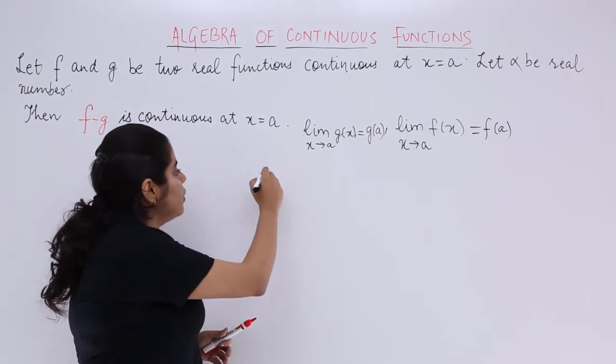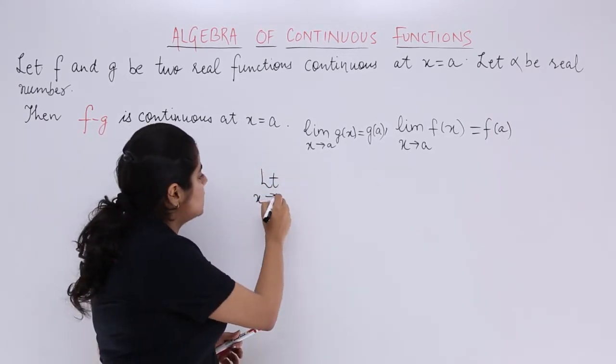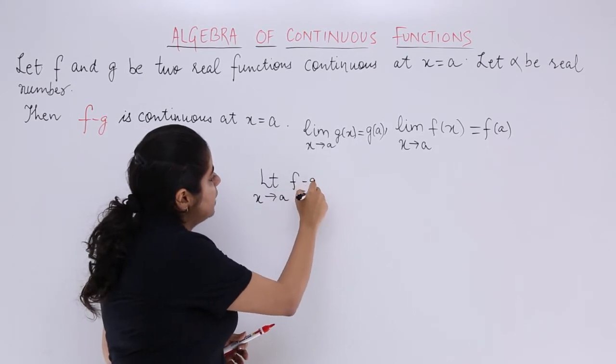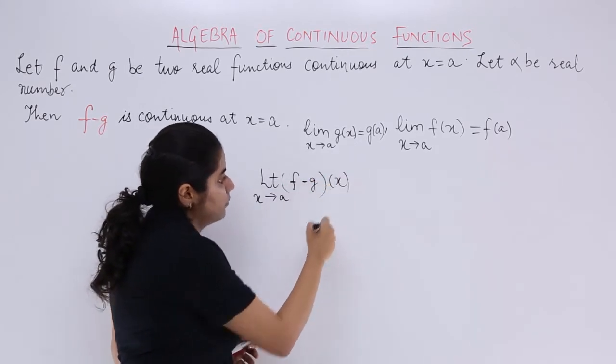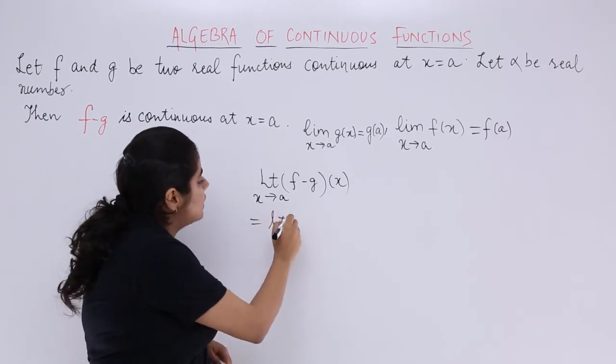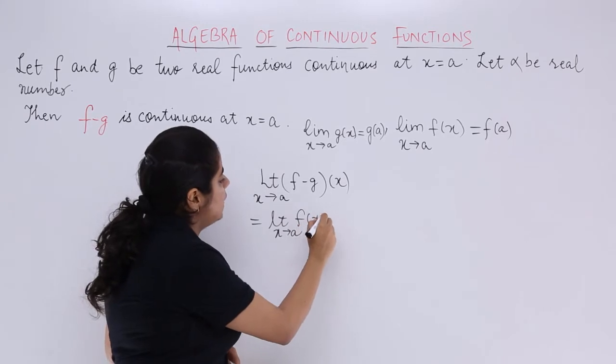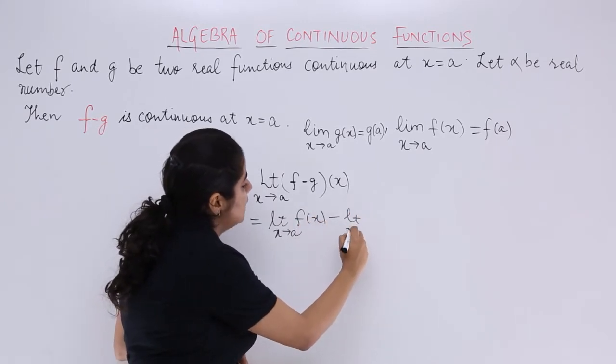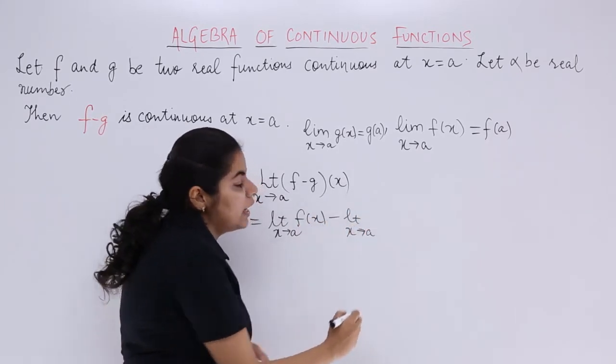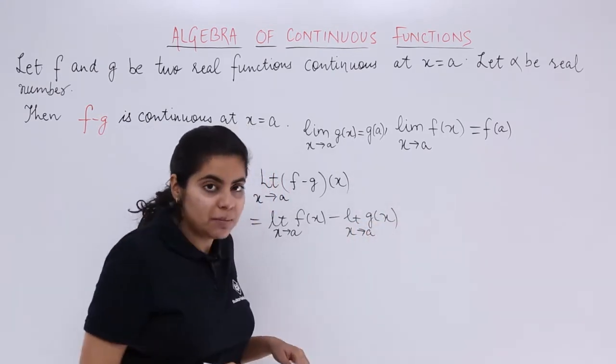So let's do that. I know that this time I am going to take into consideration limit x tends to a of (f minus g)(x). If this is the scenario, I know that always in case of limits, you can separate. When you can separate, it becomes something like this. Limit x tends to a goes to both the functions. One time it is f(x), one time it is g(x).